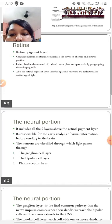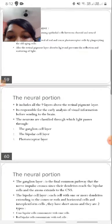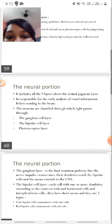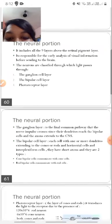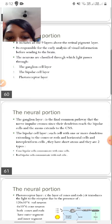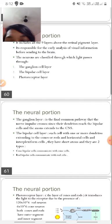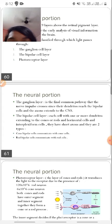Now the neural portion includes all the other 9 layers of the retina. The 3 most important structures being the ganglion cell layer, the bipolar cell layer, and the photoreceptor layer. The ganglion cell layer is the final common pathway that the nerve impulse processes, since the dendrites reach the bipolar cells and axons extend to the CNS. So ganglion cell layer, essentially the axons of the ganglion cell layer are what makes up the optic nerve. The bipolar cell layer, each cell with one or more dendrites extending to the cones and rods and horizontal cells and interplexiform cells. They communicate with the cone cell on one hand and with the ganglion cell on the other hand.